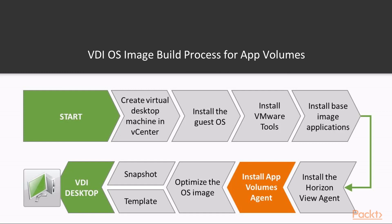The flowchart on screen describes the build process for a Horizon View based VDI desktop build. The build process is exactly the same as you would follow for building any other Horizon View based virtual desktop machines. However, as previously mentioned, you now need to include the App Volumes agent as part of the image build. This is highlighted in orange in the diagram on screen.